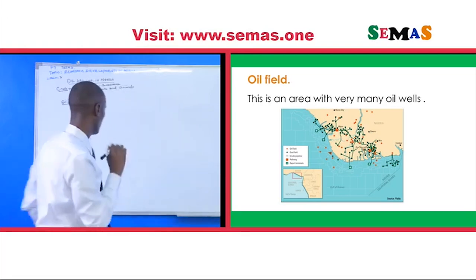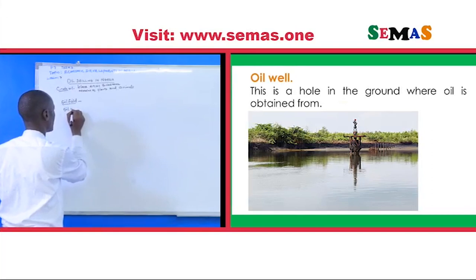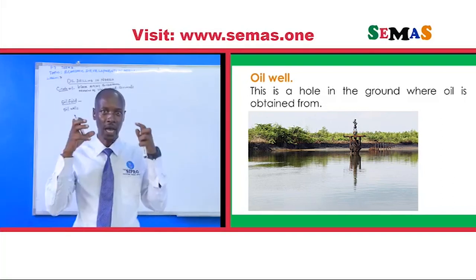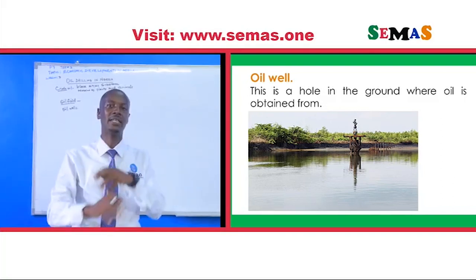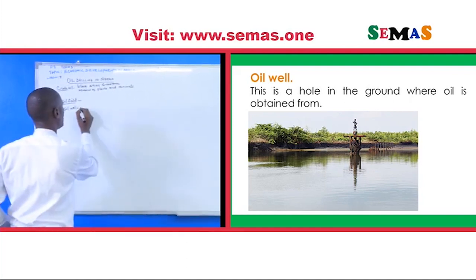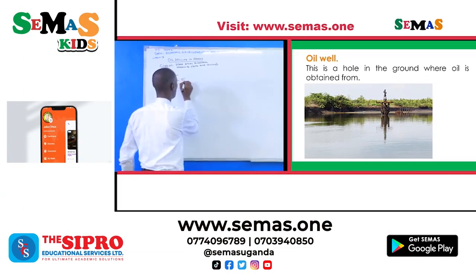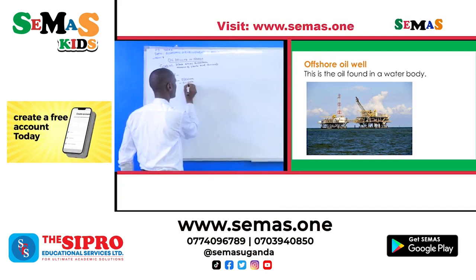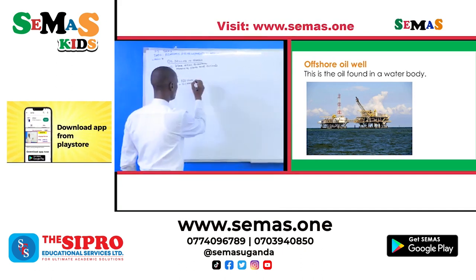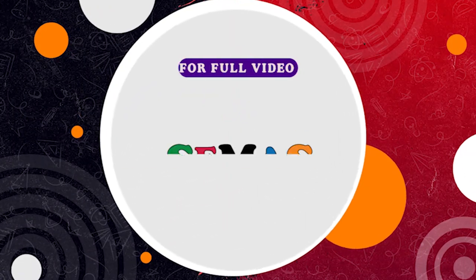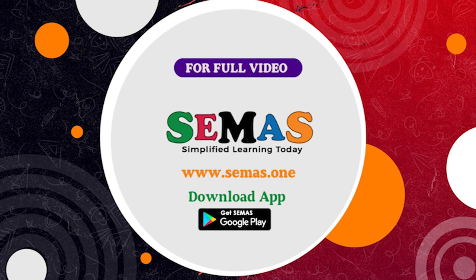In the oil field, we find oil wells. Oil wells are the exact areas in the oil field where this oil is mined. Our oil wells are categorized into two: we have the offshore oil wells and we have the onshore oil wells. Offshore oil wells are the ones that are found in a water body.